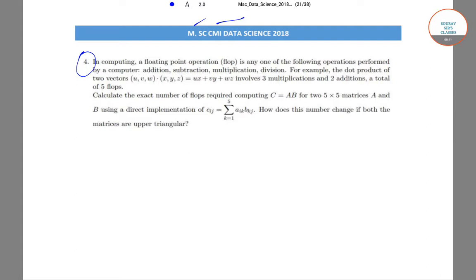In this question it has been given that in computing, a floating point operation — flop — is basically any one of the following operations performed by a computer: that is addition, subtraction, multiplication, division.